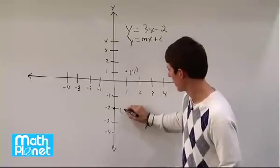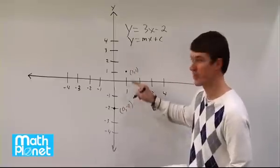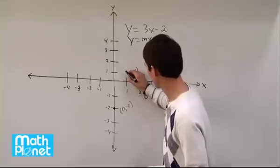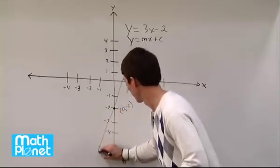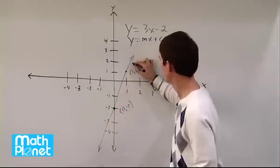So we have this y-intercept of 0, negative 2, and this point of 1, 1. Now we just need to connect these with a line. And that's it.